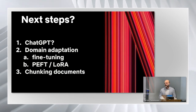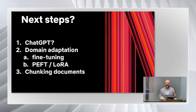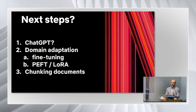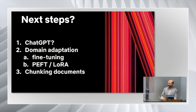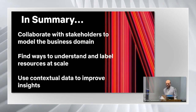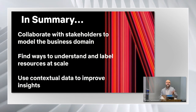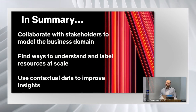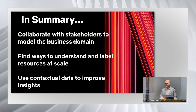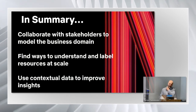Another area to try is chunking documents — a more basic approach, but one that might actually give the best results. That's taking your documents and improving your parsing of them, trying to shrink them down into units that make more sense. In summary: if you collaborate with stakeholders to model the business domain, you'll probably get better results than if you try to have that model emerge from your documents. Find different tools — such as the trie data structure — which you can use for things like TF-IDF to understand your resources at scale. And finally, use contextual data to understand and improve the insights you get from your documents.